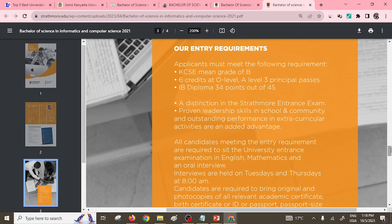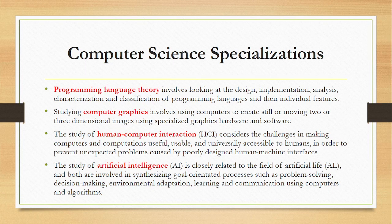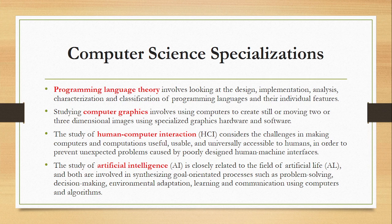Once you have completed this course, you can pursue various specializations. These include algorithms and data structures, and programming language theory — which involves the design, implementation, analysis, characterization, and classification of programming languages based on predefined features. You can reference the units allocated in the various universities we have looked at to guide your specialization choice.